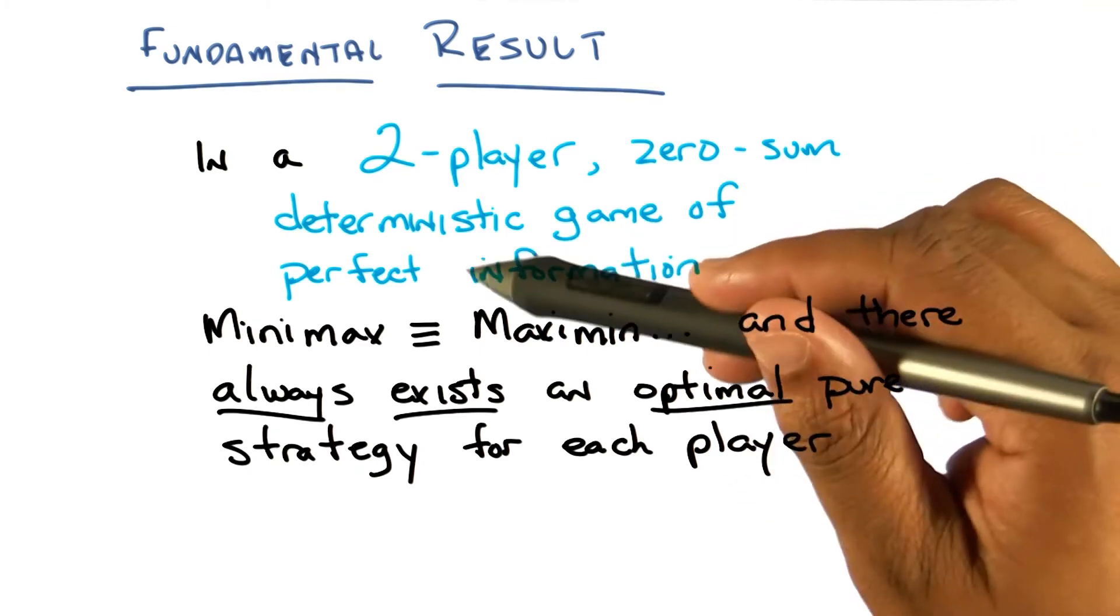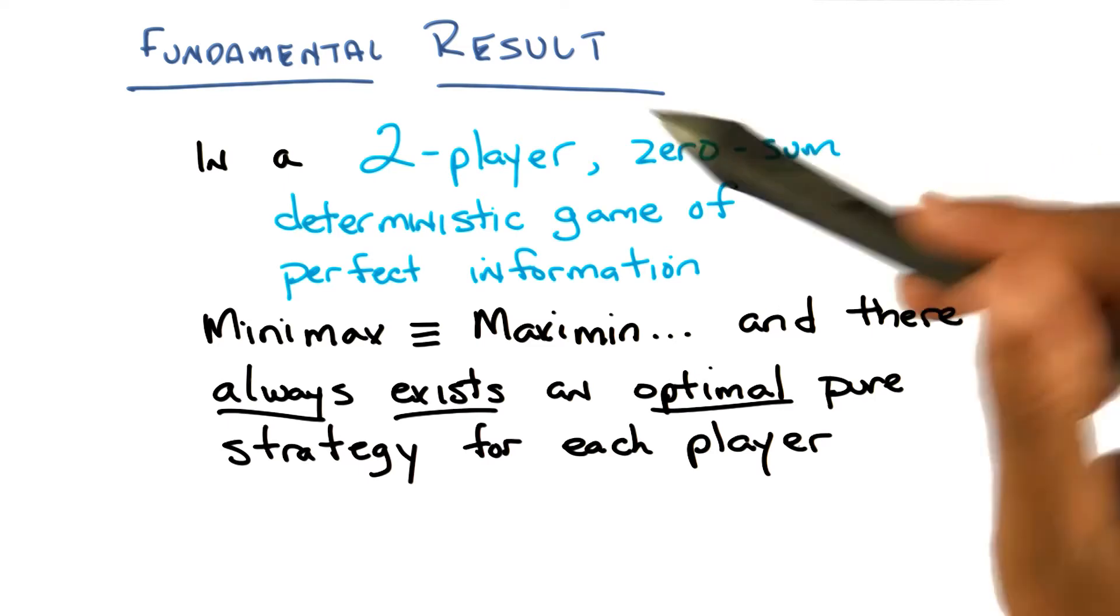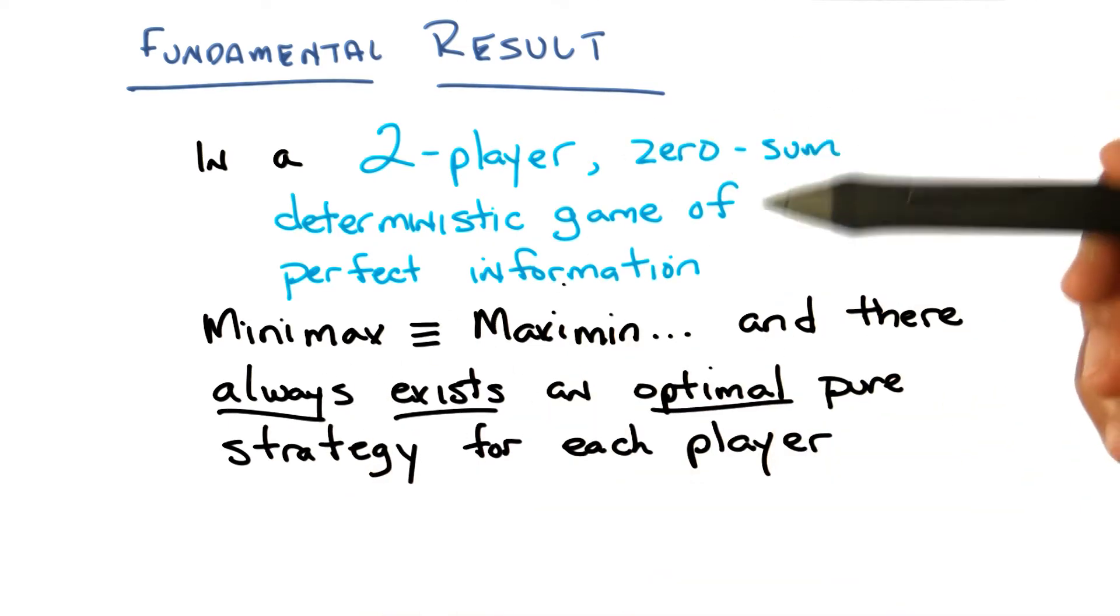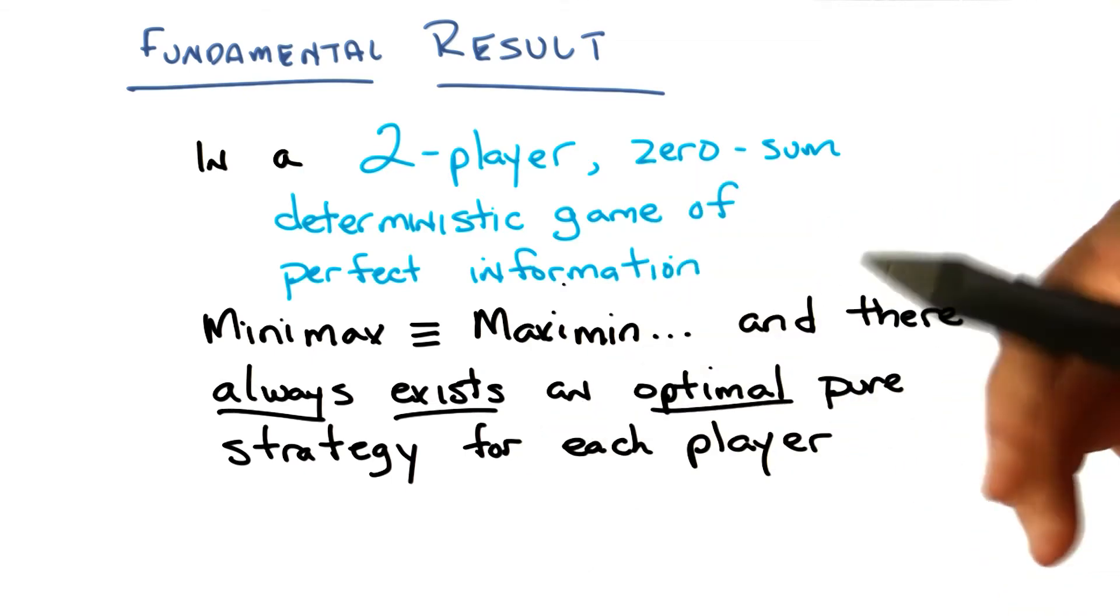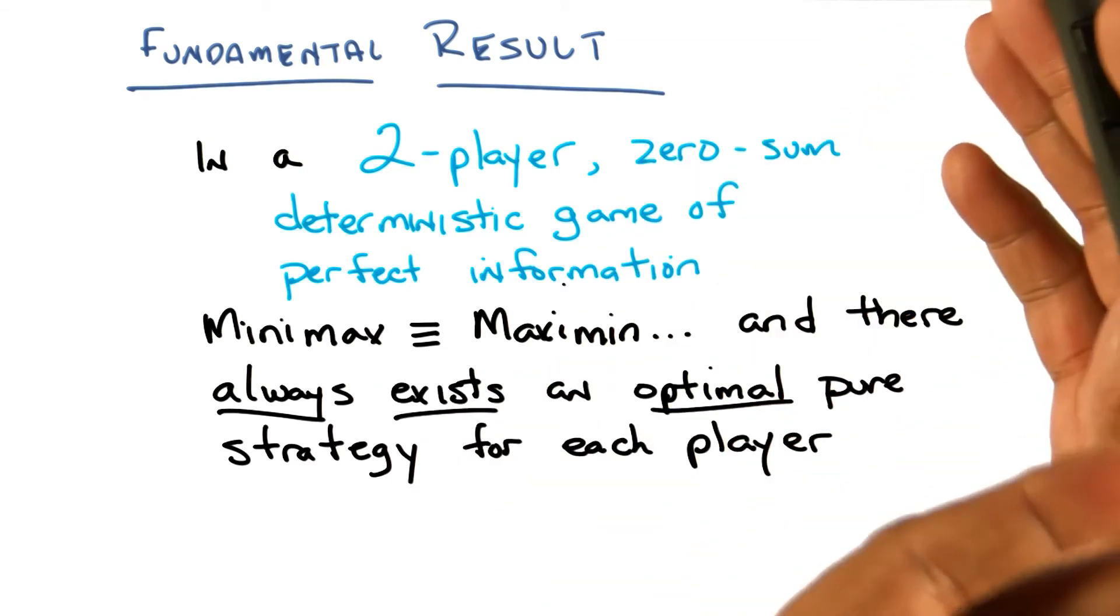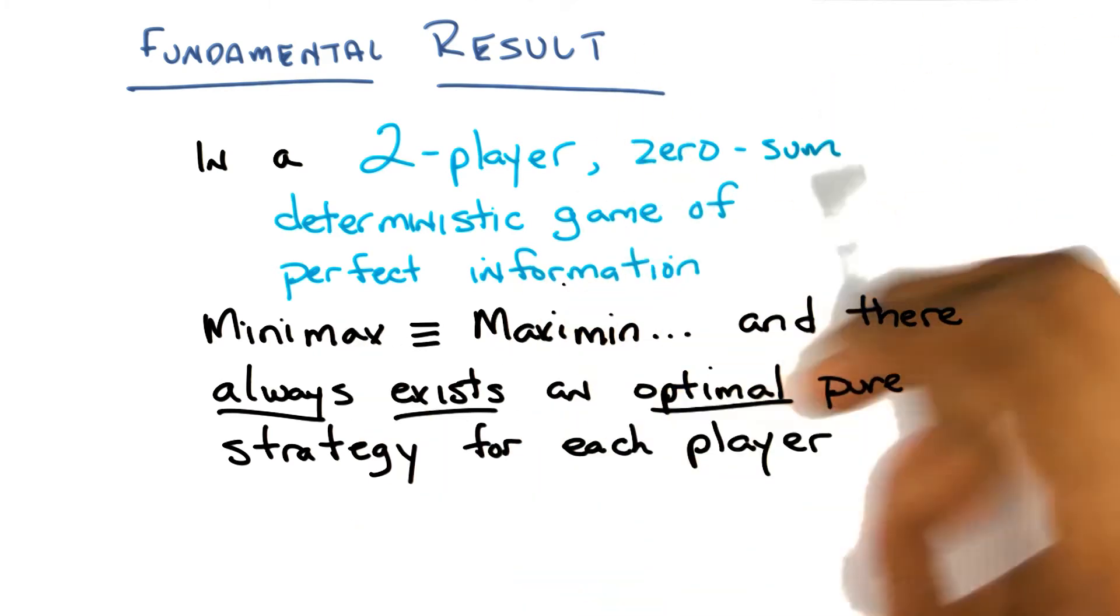So in a world where you have perfect information, it's zero sum, then the strategy of minimax and maximin give you the same answer. And furthermore, there is always some place where the column and the row cross. The best column and the best row cross. And that is always going to be the solution to that particular game.